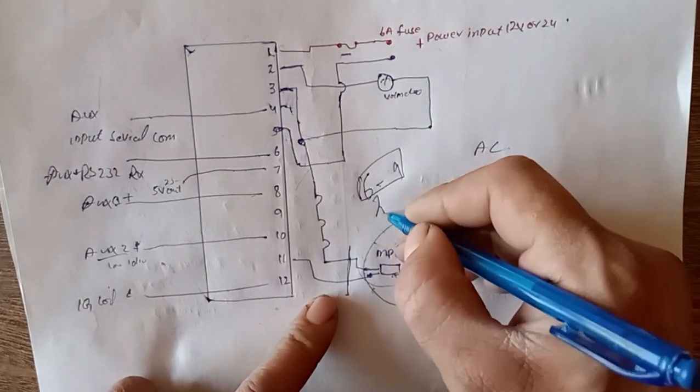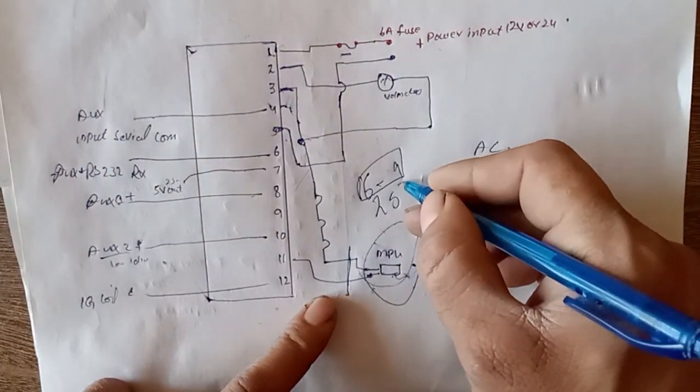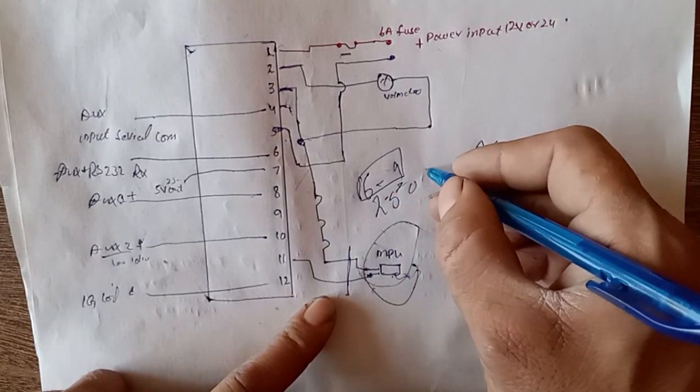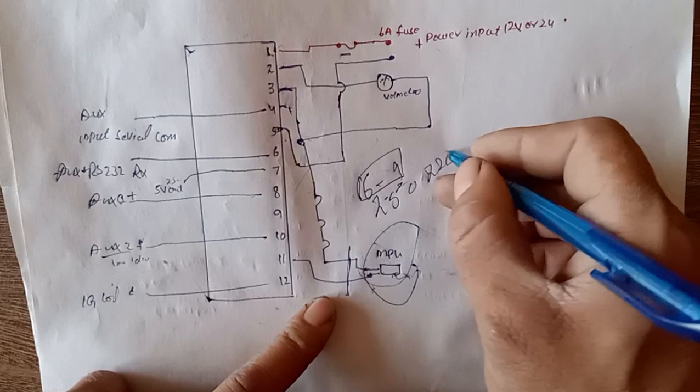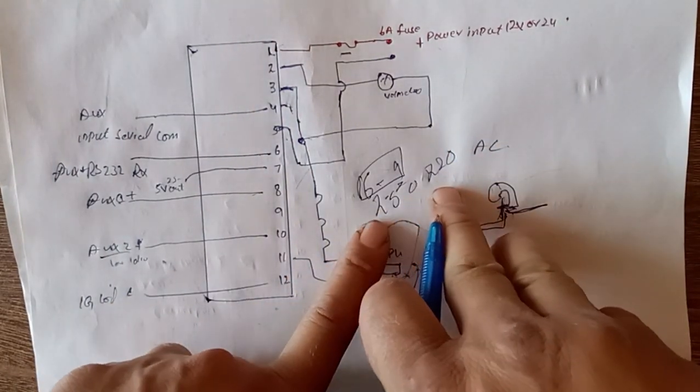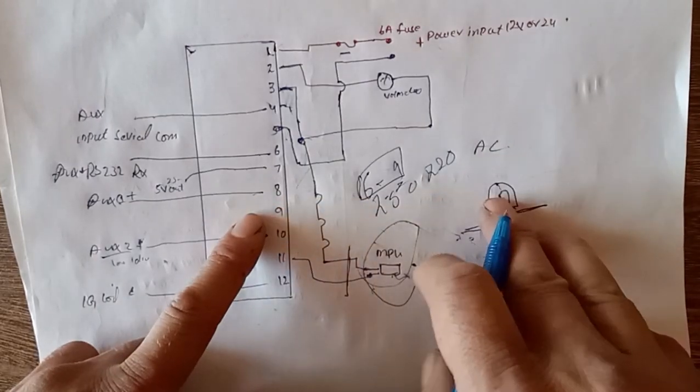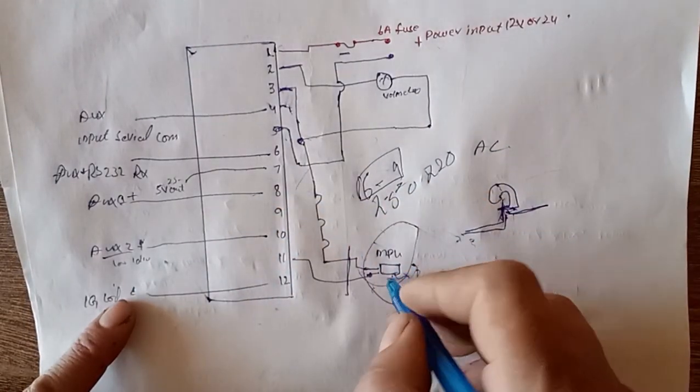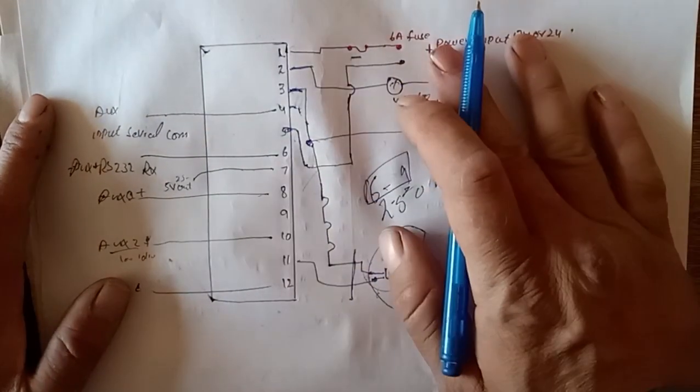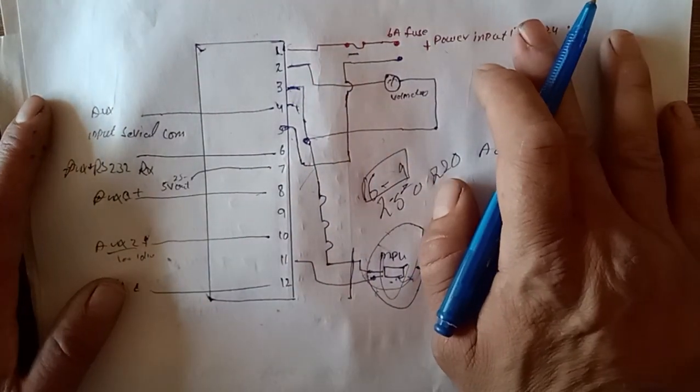Make sure your engine RPM should be 250 or 220 RPM during cranking. If your battery is low, engine slow turning over, the MPU does not generate signal or AC voltage. This is like a small generator.